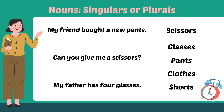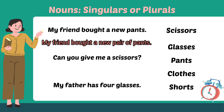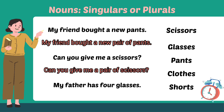So let's look at the examples. I have written a sentence: 'My friend bought a new pants.' This is totally incorrect, because when we use pants we use 'a pair of.' The correct sentence is: My friend bought a new pair of pants. Another example: 'Can you give me a scissors?' This is also incorrect. The correct answer is: Can you give me a pair of scissors? If we have two or three scissors, then we say two pairs of scissors, or three pairs of scissors, or four pairs of scissors.